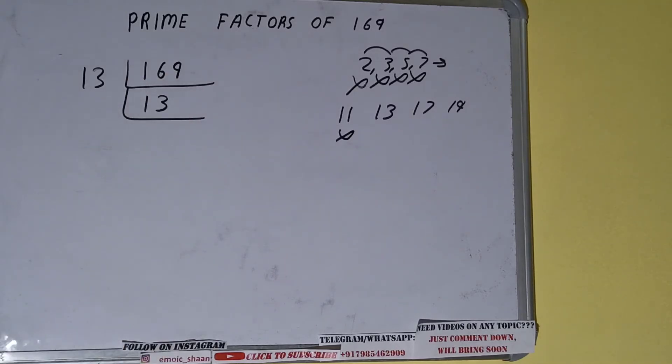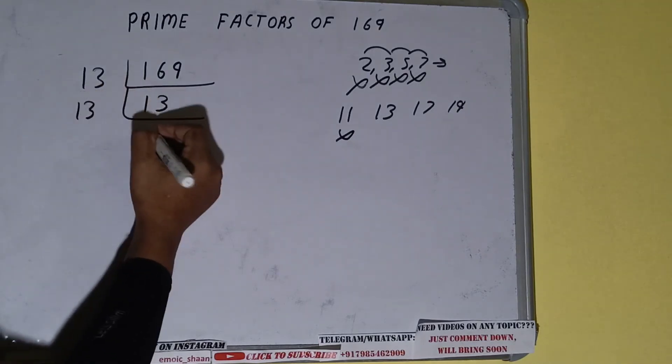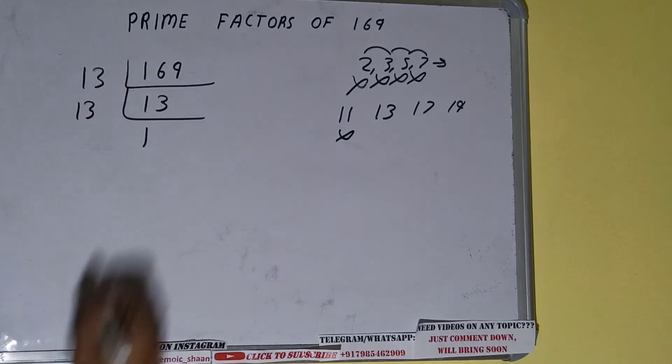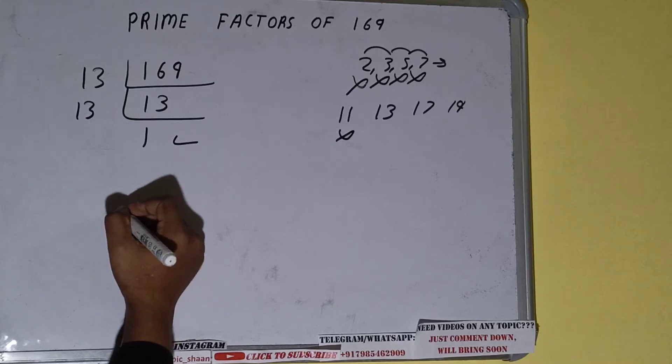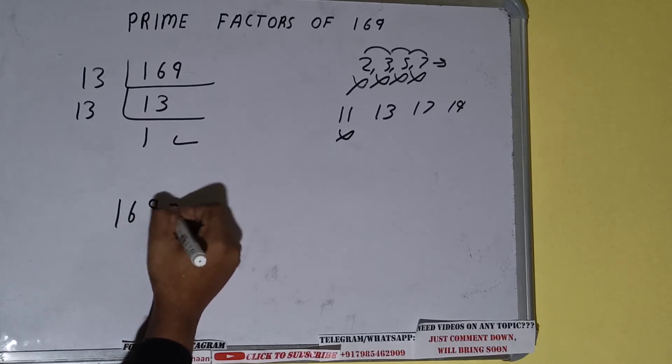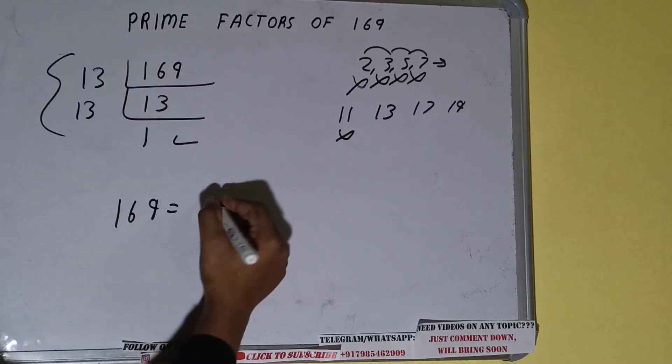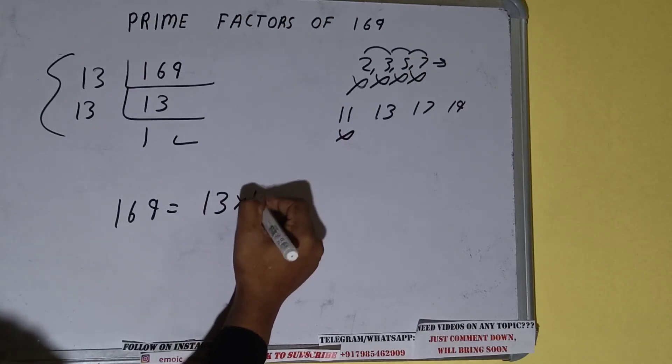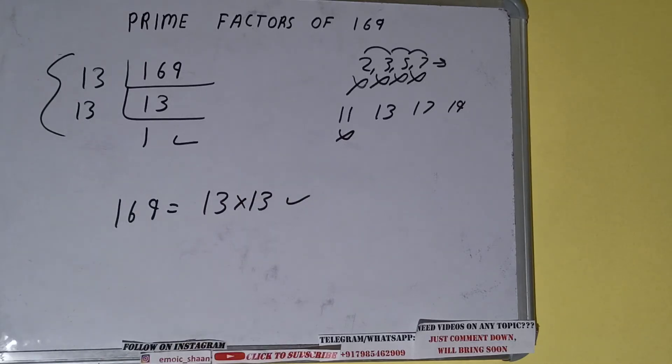And 13 is again divisible by 13. Divide it and we'll be getting 1. Once we get 1, we need to stop and do one last thing. The prime factors of 169 will be whatever we have on the left-hand side: 13 × 13. That would be the answer. So this is all about prime factors of 169.